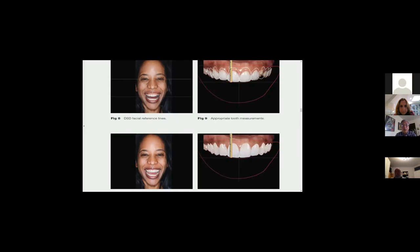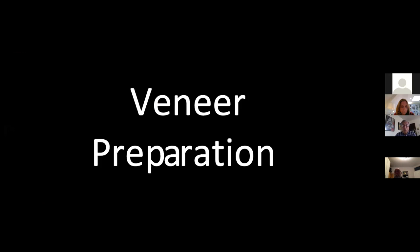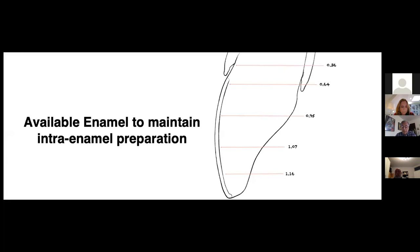In preparing teeth for crowns or veneers, you have to be aware of biological width: the sulcus is 0.67 mm, epithelial attachment 0.97 mm, connective tissue 1.07 mm. You don't want to violate the biological width — tissue will be constantly inflamed. It's not just about the restoration; the soft tissue should be like a background for the veneers or crowns. With veneer preparations, ideally you want to keep them in enamel for the best bond.